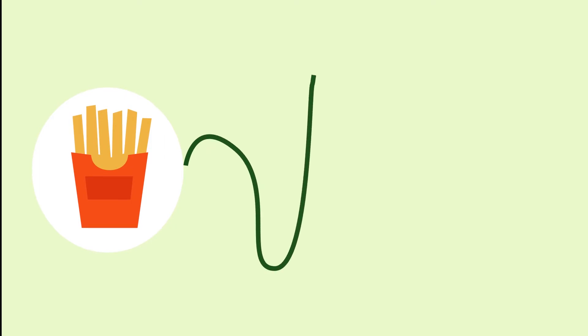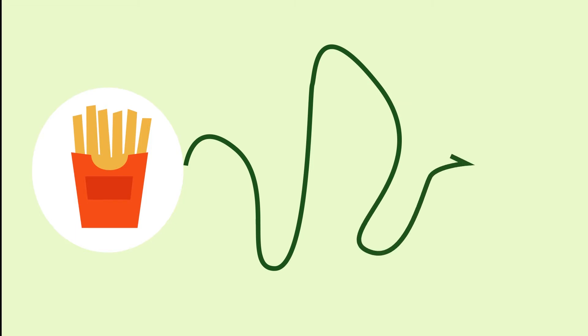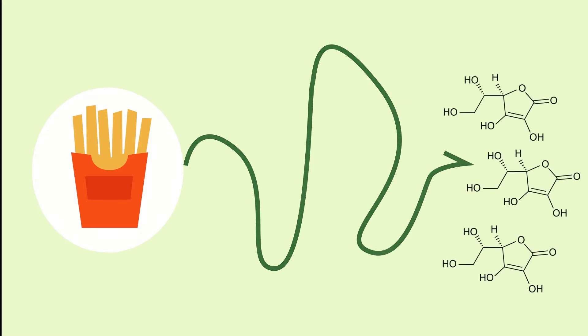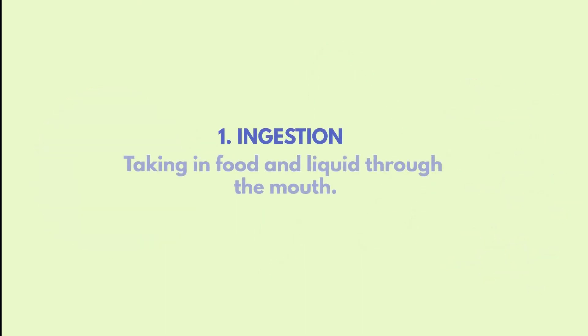Shortly, we will talk about what happens to a food item as it passes through the GI tract, from mouth to anus. There will be an emphasis on the six basic processes that occur within the GI tract. The first process is ingestion, which is the process of taking in foods and liquids through the mouth — in other words, eating and drinking.